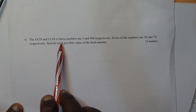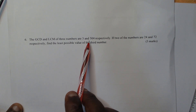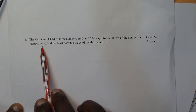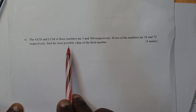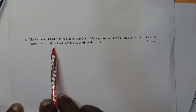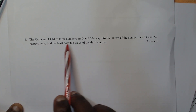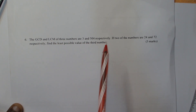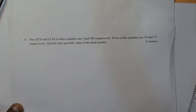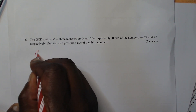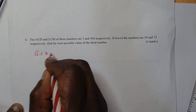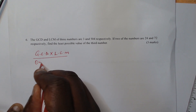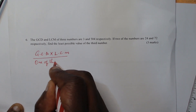The GCD and LCM of three numbers are 3 and 504 respectively. If two of the numbers are 24 and 72, find the least possible value of the third number. To find the least possible value, you're given the GCD is 3 and the LCM is 504. To get the first possible number, you get GCD times the LCM, then divided by one of the numbers.